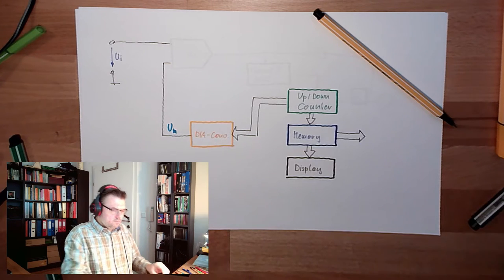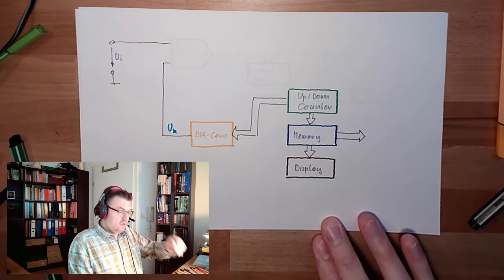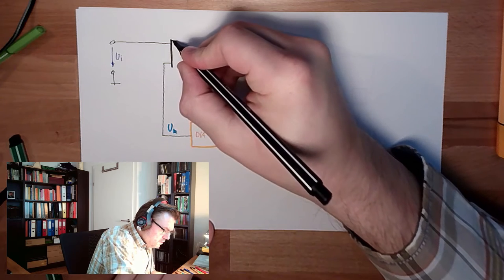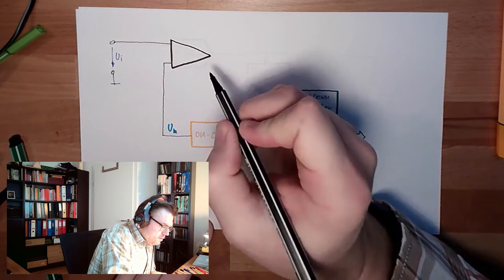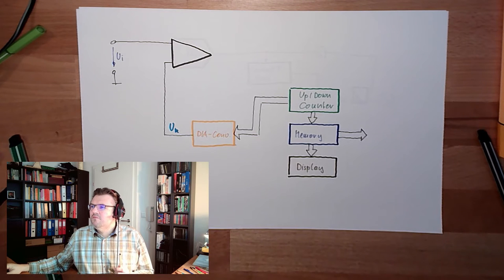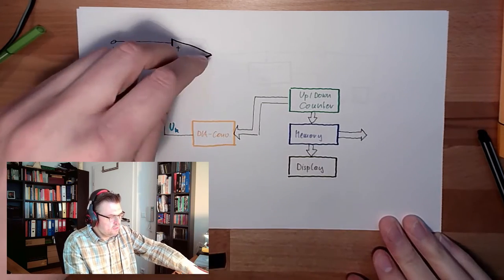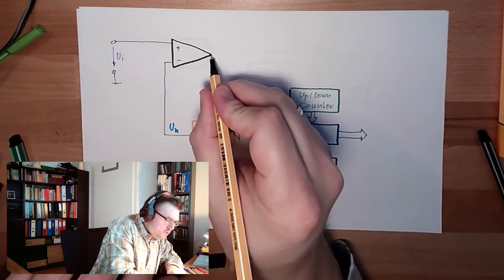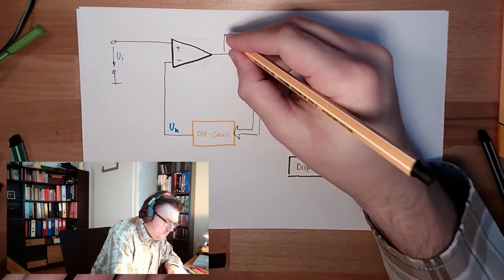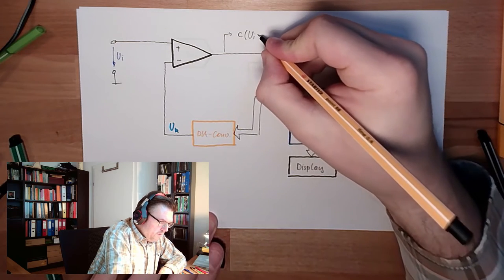Now there is a difference. Last time we had here a comparator which will just switch on and off. Now we are using a differential amplifier. This amplifier amplifies the difference between the plus and the minus input. So if this is bigger than this, then here we have a positive voltage. Here actually we have a factor multiplied by ui minus uk.